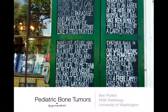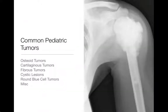So we're going to look at common pediatric bone tumors, and some of this is going to go through tumors we've already covered in other lectures, but in this case pertaining to kids and young adults. We're going to look at these and based upon the matrix of the lesion, or what they're made out of, we'll divide these into osteoid tumors, cartilaginous tumors, fibrous tumors, cystic lesions, round blue cell tumors, and miscellaneous things that don't fit nicely into any of those categories.